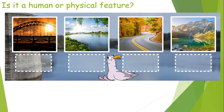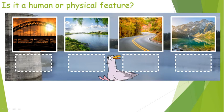Let's play a little game called 'Is it a human or physical feature?' I've got four photographs and I need you to decide whether it's a human feature — somebody made it — or a physical feature — whether it was always there because it's a natural feature. We've got a bridge, what looks like a lake, a road, and what looks like a mountain scene with a lake. You could have a go at drawing the photos or just write what they are — physical or human.